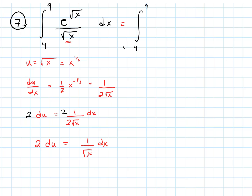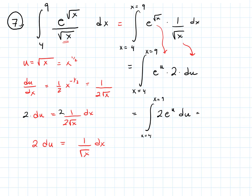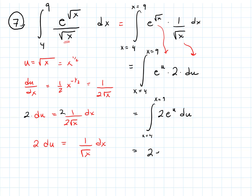I'm going to multiply both sides by 2 to give me 2 du = (1/√x) dx, because I see that 1/√x in my integral. Rewriting the integral from x=4 to x=9, I have e^(√x) · (1/√x) dx. My u goes in for the power and my 2 du goes in for (1/√x) dx, giving me the integral of 2e^u du.